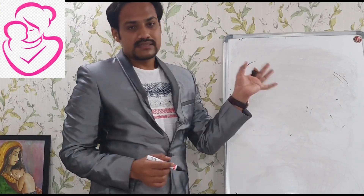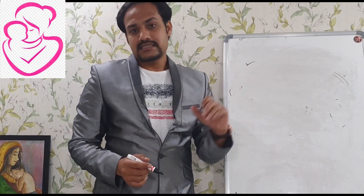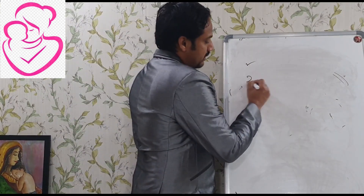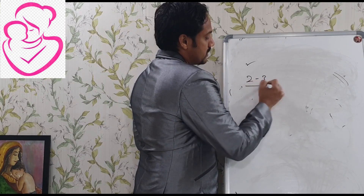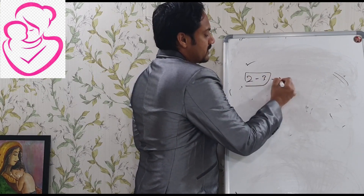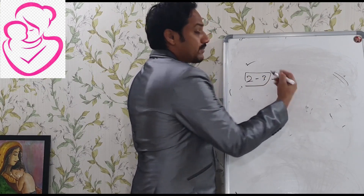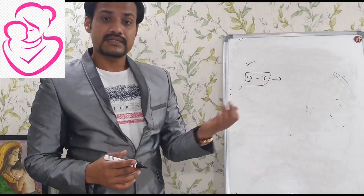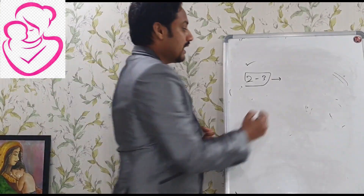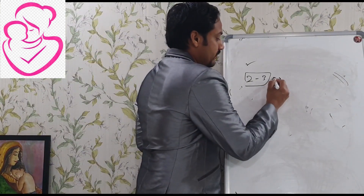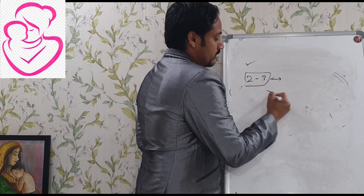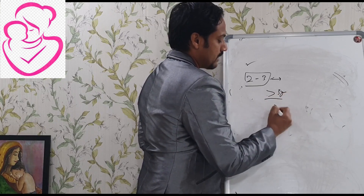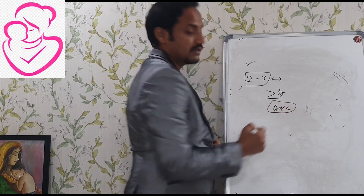For tubal patency, the best test is HSG. If the duration of infertility is less than 2-3 years, HSG is appropriate. For 3-4-5 years of infertility, we do not rely on HSG alone, and diagnostic hysterolaparoscopy is the best option.